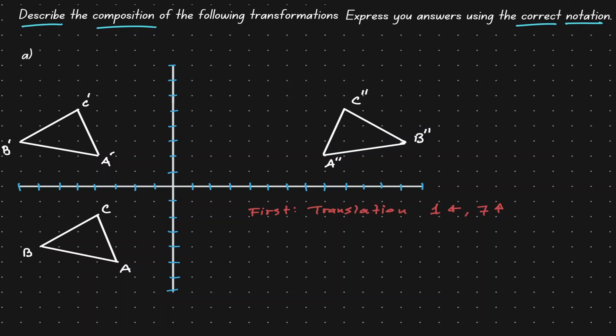So what could it be? Well, let's look at the orientation of this triangle. Notice that point A is on the right-hand side of that triangle, and A' is on the left-hand side.